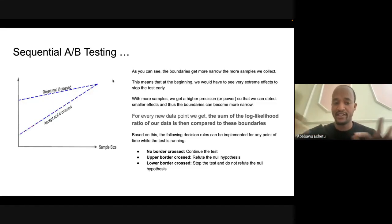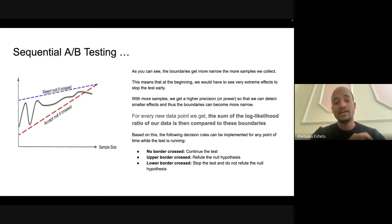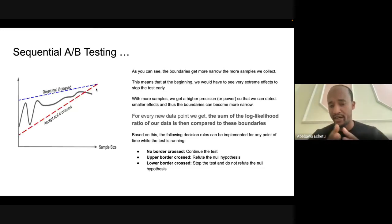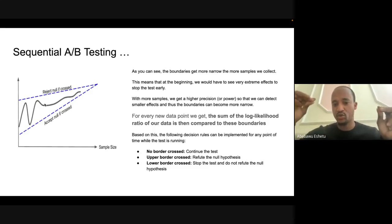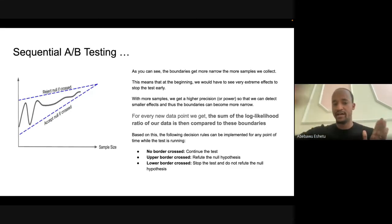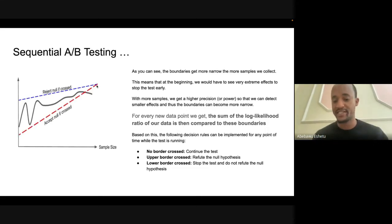If the likelihood ratio passes the bottom boundary, we accept the null hypothesis. If it lies between the two boundaries, we need more sampling and more data. As we get more and more data, the boundaries shrink together, and at some point they become very close when we have a rich data point — that is where we come to the final decision that the two variants are similar.